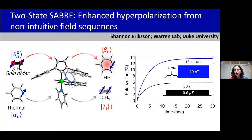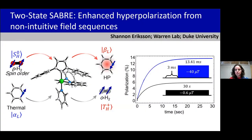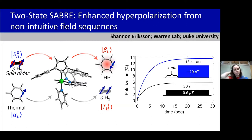Hi, everyone. My name is Shannon Erickson. I work as a graduate student in Dr. Warren's lab at Duke University. And today I'm going to be talking about two-state SABR and some of the enhanced hyperpolarization that we're getting from some non-intuitive pulse sequences.